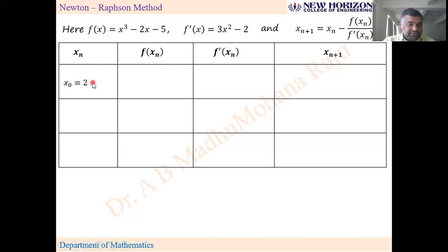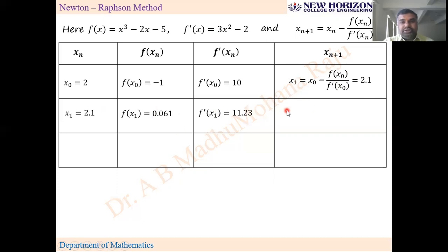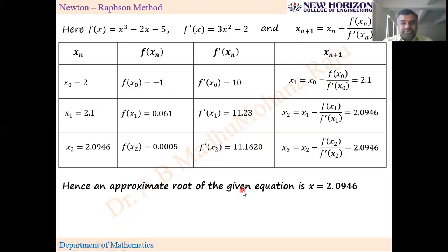Starting with x₀ = 2: f(x₀) = -1, f'(x₀) = 10. Substituting into the formula gives x₁ = 2.1. Take x₁ = 2.1, compute f(x₁) and f'(x₁), giving x₂ = 2.0946. Then compute f(x₂) and f'(x₂) to find x₃. Since x₂ and x₃ are the same, we stop the iteration. The approximate root is x = 2.0946.